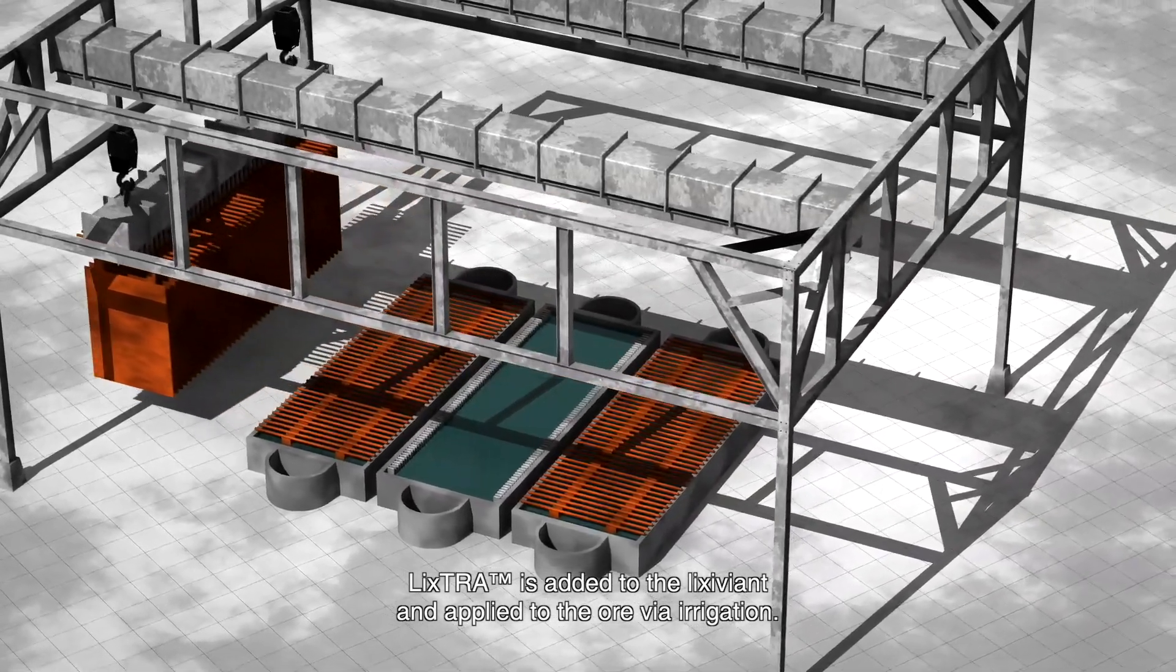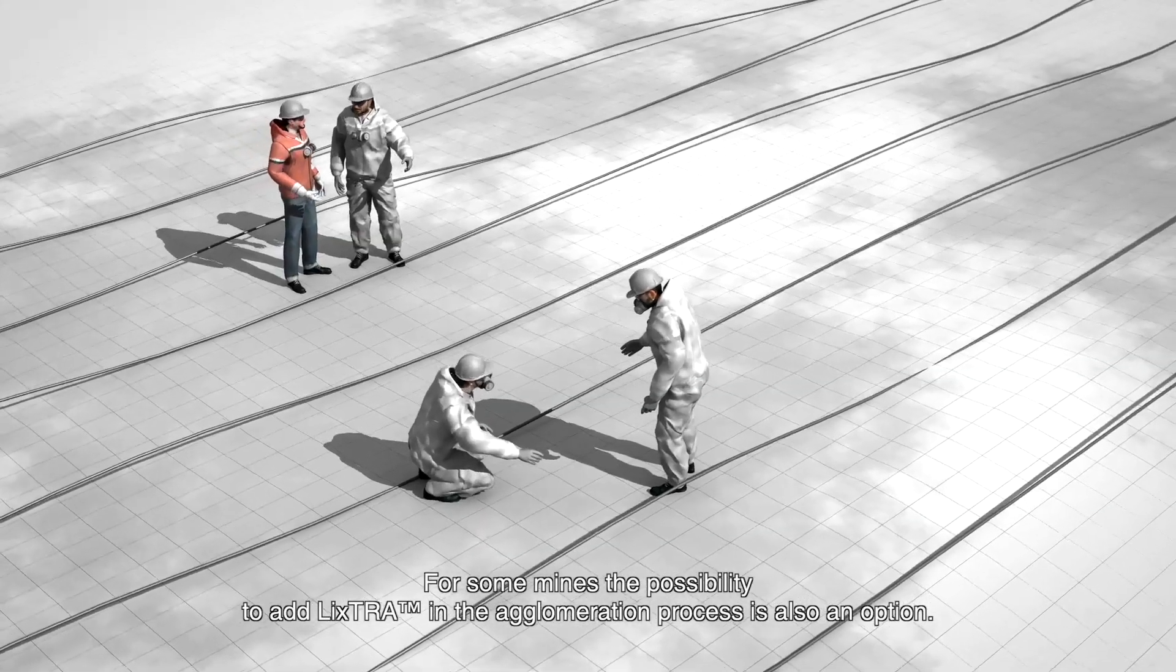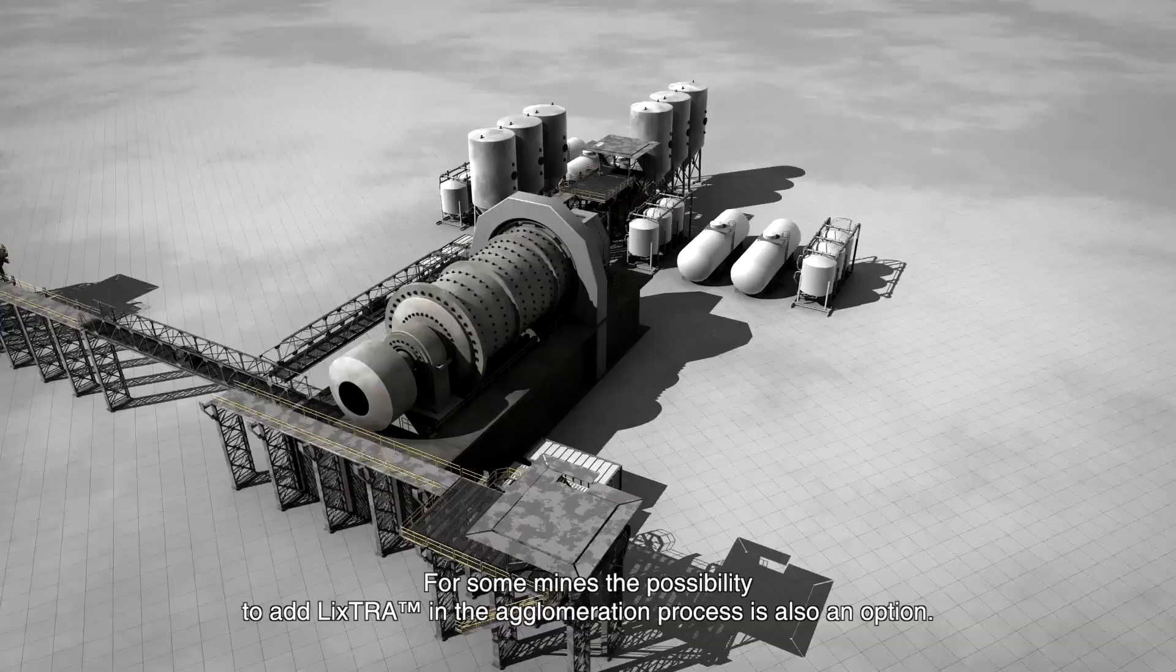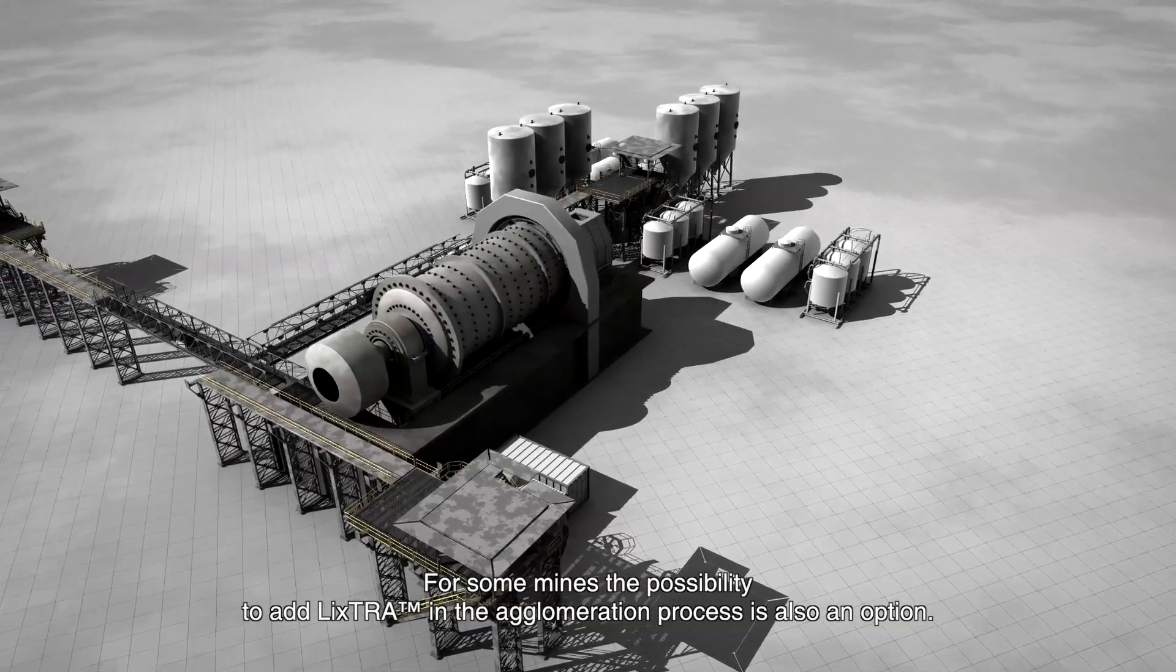Lixtra is added to the lixiviant and applied to the ore via irrigation. For some mines, the possibility to add lixtra in the agglomeration process is also an option.